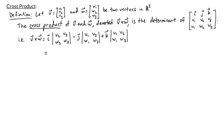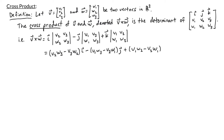Computing these determinants gives us: (v2·w3 - v3·w2)·i minus (v1·w3 - v3·w1)·j plus (v1·w2 - v2·w1)·k. Written as a traditional vector, v cross w is the vector with entries (v2·w3 - v3·w2), (v3·w1 - v1·w3), (v1·w2 - v2·w1). That's the cross product v cross w.